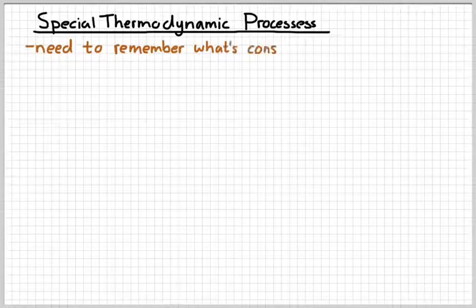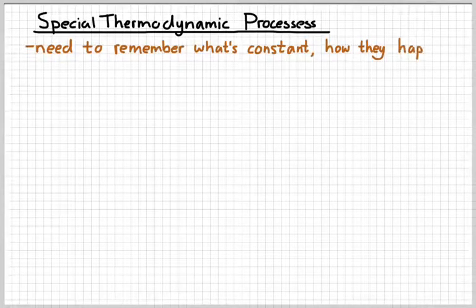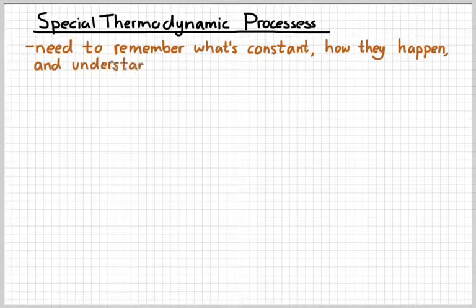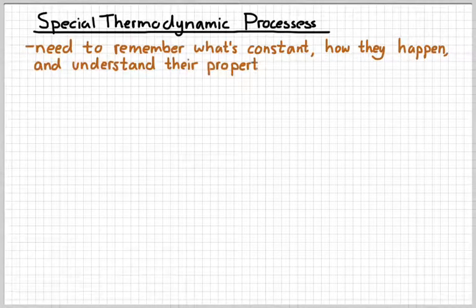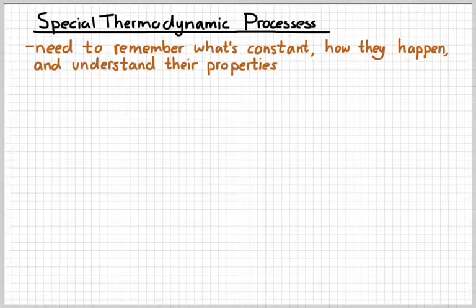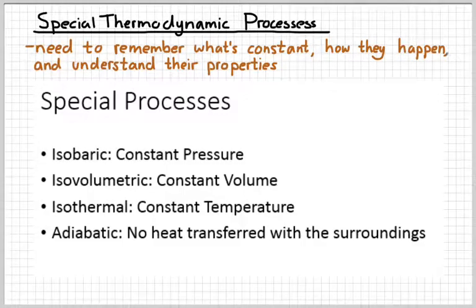In this video we are learning about the four special thermodynamic processes. What we need to do is simply remember what thing is being held constant in each of these special processes, understand how they happen, and then understand what their properties are. The four special processes are the isobaric process, isovolumetric, isothermal, and adiabatic.